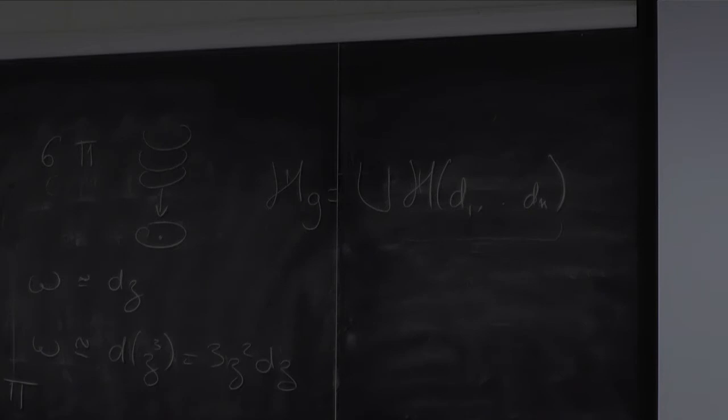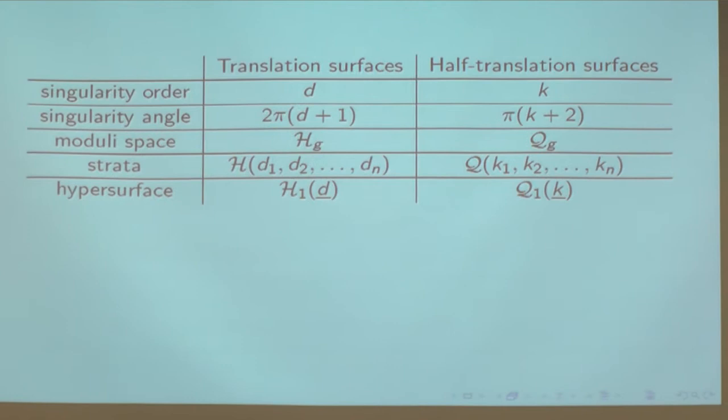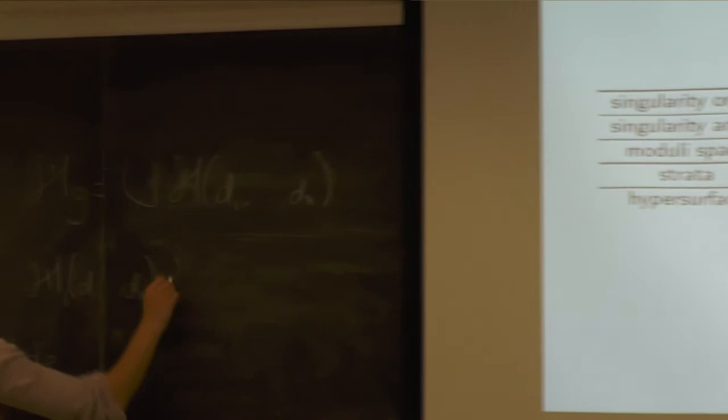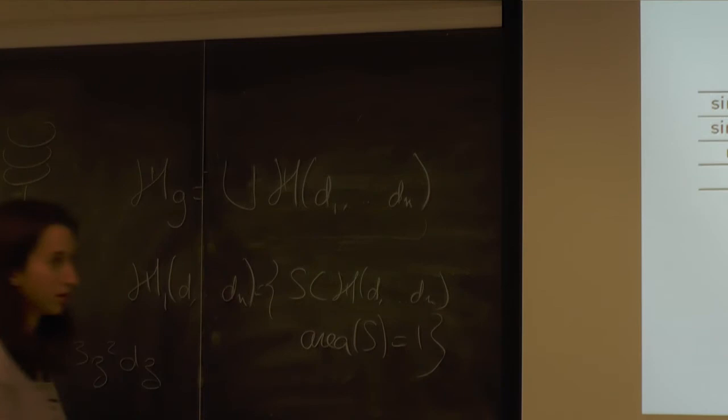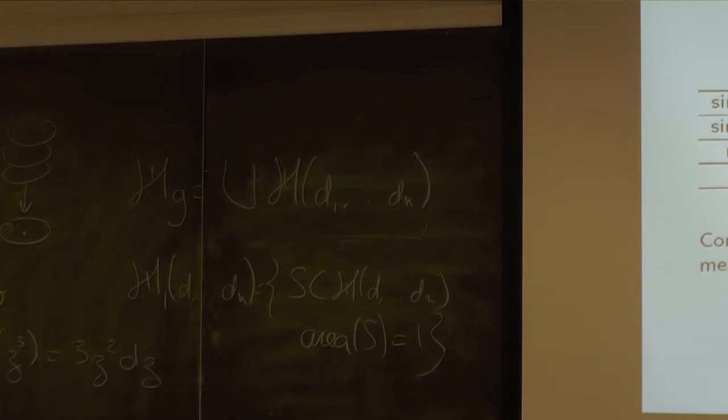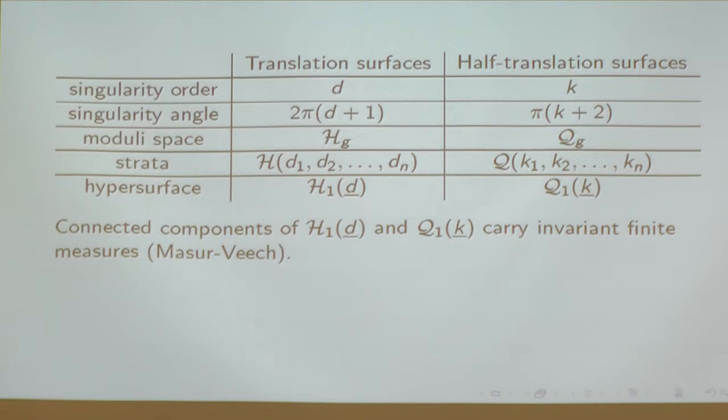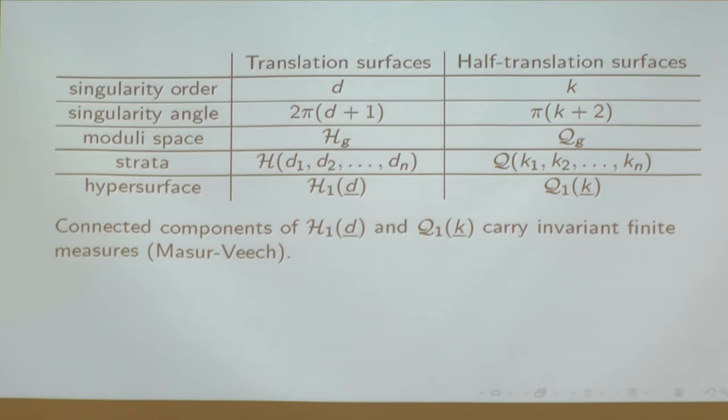Inside these strata, I will look at hypersurfaces — the set of surfaces in the stratum that have area 1. I do the same for quadratic differentials. It is known that these hypersurfaces carry invariant finite measures. Invariant here means invariant under the action of GL₂(ℝ), which acts naturally on the sides of the polygons.